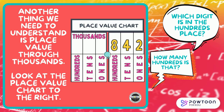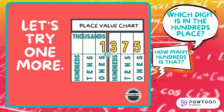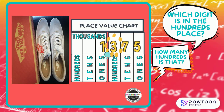Another thing we need to understand is place value through thousands. Look at the place value chart to the right. Which digit is in the hundreds place? How many hundreds is that? Did you say that there's a three in the hundreds place? That's worth 800. Let's try another number. Which digit is in the hundreds place? How many hundreds is that? Did you say there's a three in the hundreds place? That's three hundreds — worth 300. Let's try one more. Which digit is in the hundreds place? How many hundreds is that? Did you say there's a three in the hundreds place? That's worth 300. I could buy a lot of cute shoes with that!